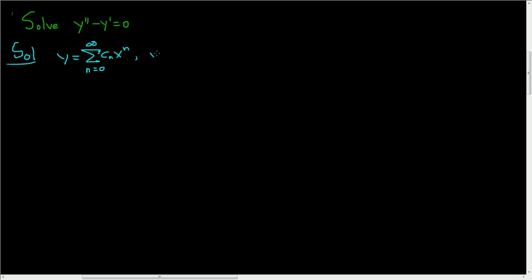Now we'll take derivatives. So y prime is the sum starting at one to infinity of c sub n times n times x to the n minus one. The reason it starts at one: the zeroth term is c sub zero times x to the zero, which equals c sub zero, a constant. When you differentiate a constant you get zero, so the zeroth term disappears and we start at one.